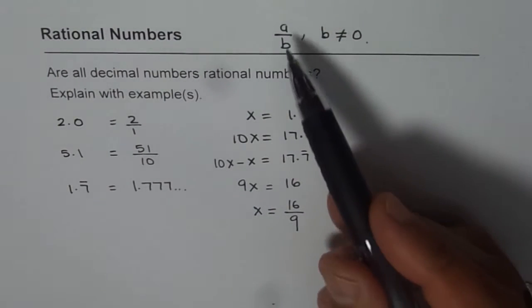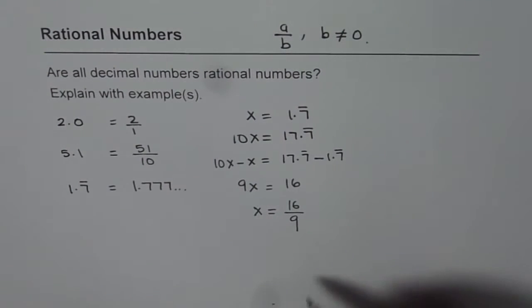Now that is in the form of a over b, where b is not 0. And that is a rational number. So, this kind of decimal number can be written as a rational number, and therefore, it is also a rational number.